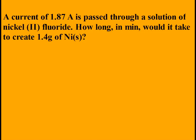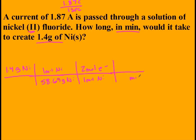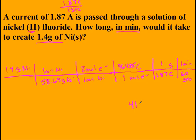Try the reverse: starting with 1.4 grams of nickel and current of 1.87 amps, find the time in minutes. Start with 1.4 g Ni × (1 mol Ni / 58.69 g) × (2 mol e⁻ / 1 mol Ni) × (96,485 C / 1 mol e⁻) × (1 s / 1.87 C) × (1 min / 60 s) ≈ 41 minutes. Nickel has a +2 charge, so 2 moles of electrons per mole of nickel.